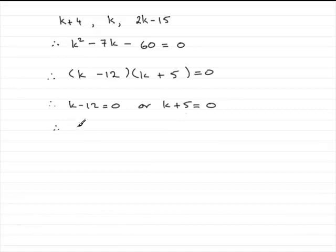And if you add 12 to both sides here, you get k equals 12. Or if you take 5 from both sides here, you get k equals minus 5. Now we're told that k is a positive constant.